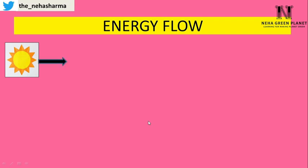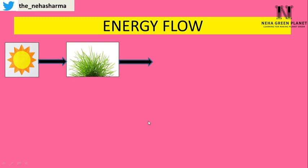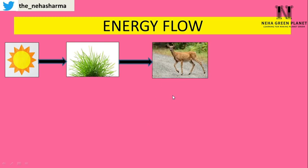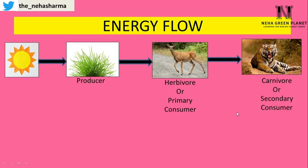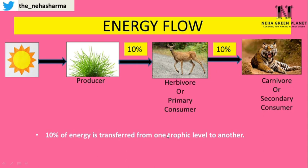If sunlight is the main source of energy, it is transferred into plants; from plants, energy is transferred into herbivores like deer; and from herbivores into carnivores like tiger. The producer is grass, the primary consumer is deer, and the secondary consumer is tiger. Always 10% of energy is transferred from one trophic level to the next. Trophic levels are restricted to four or five because energy decreases successively and the last trophic level would not have enough energy for utilization. Energy flow is always unidirectional.